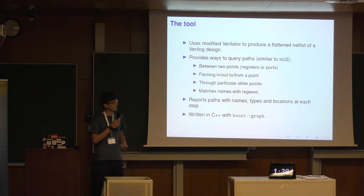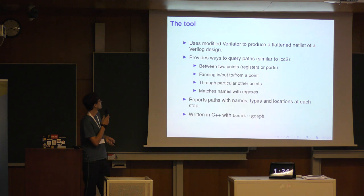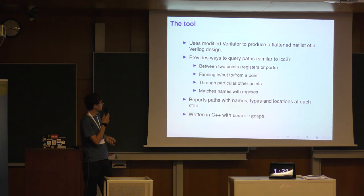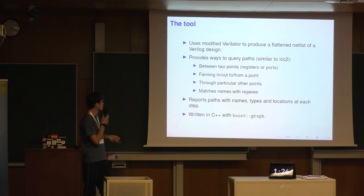The tool produces a flat netlist from the Verilog design and then provides ways to query paths, similar to ICC2. For example, you can find paths between two points, find paths through particular points, or match names with regexes — so you can work around the flattened names that you have in the backend.